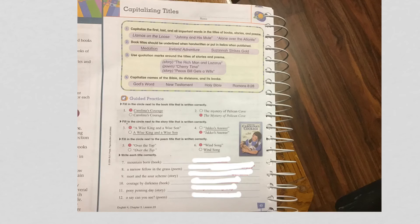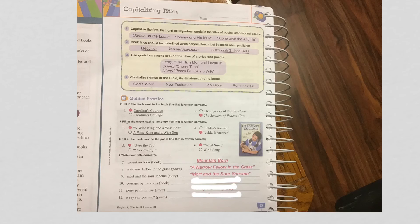Then at the bottom, we're writing the book, poem, or story correctly — meaning capital letter, and then does it need to be underlined or does it need quotation marks? A book gets underlined. So there's our book Mountain Born — it's underlined and both words are capitalized. The next one's a poem, it gets quotation marks. A story gets quotation marks as well. A book gets underlined. The next one's a story — it just gets quotation marks. And a poem gets quotation marks. Pretty easy.